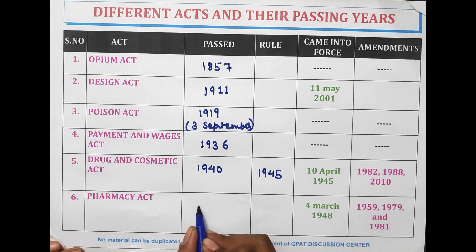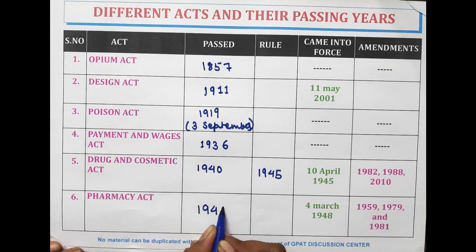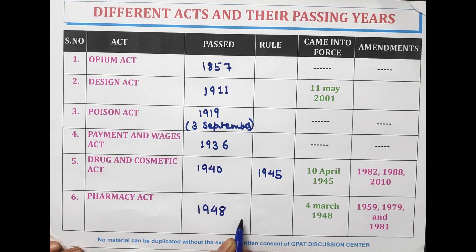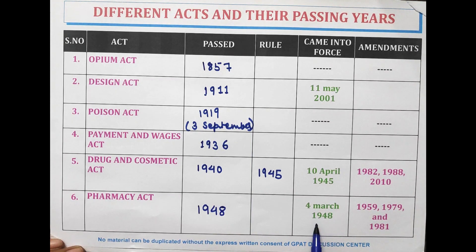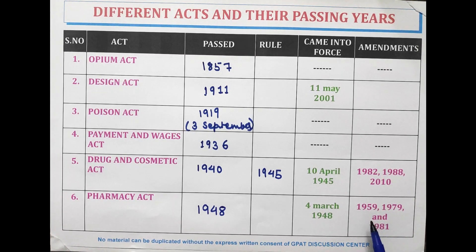The Pharmacy Act came into the year 1948 and came into force on 4 March 1948. Amendments were done in the years 1959, 1979, and 1981.